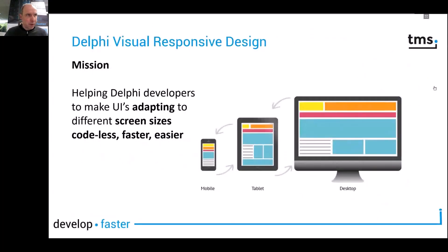What is the purpose of visual responsive design? That is to create user interfaces that adapt to screen size, to offer the most convenience, the best user experience, regardless of the screen size. And with visual responsive design, you would do this all without writing code.